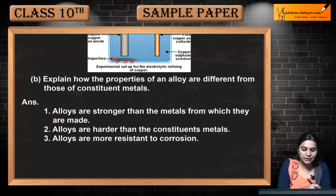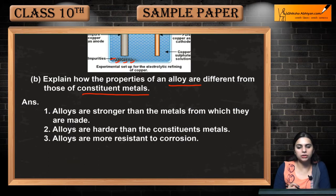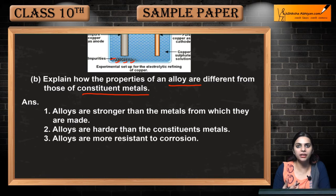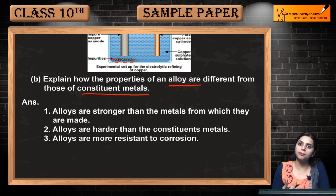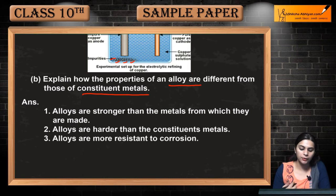Next question: explain how the properties of an alloy are different from those of constituent metals. Alloys ki properties kaisi different hain uske constituent metals se? Alloys bante kaise hain — jab bhi do metals ya ek metal aur ek non-metal mix karke new substance banaate hain, to use hum alloy bolte hain.